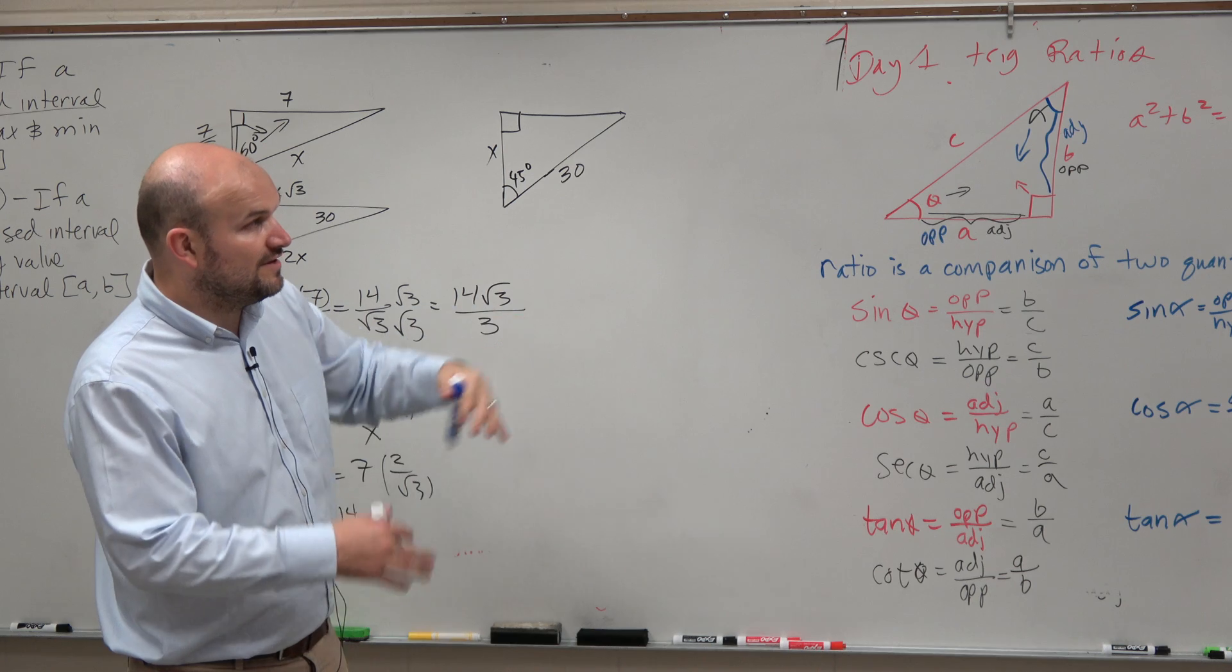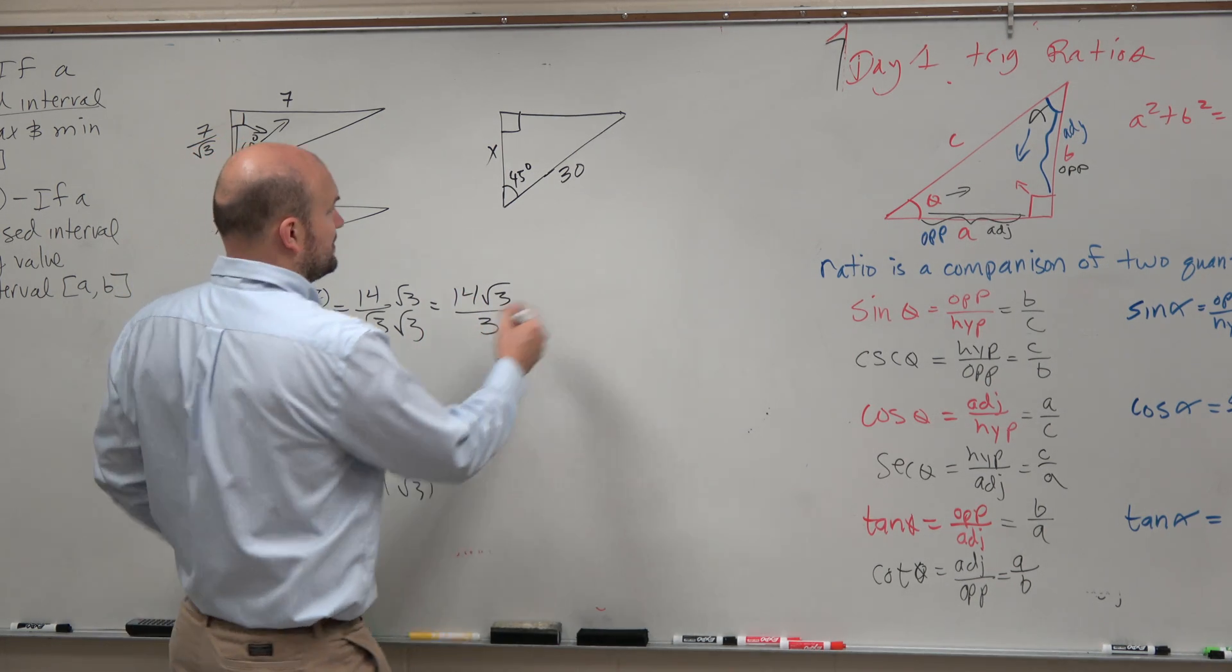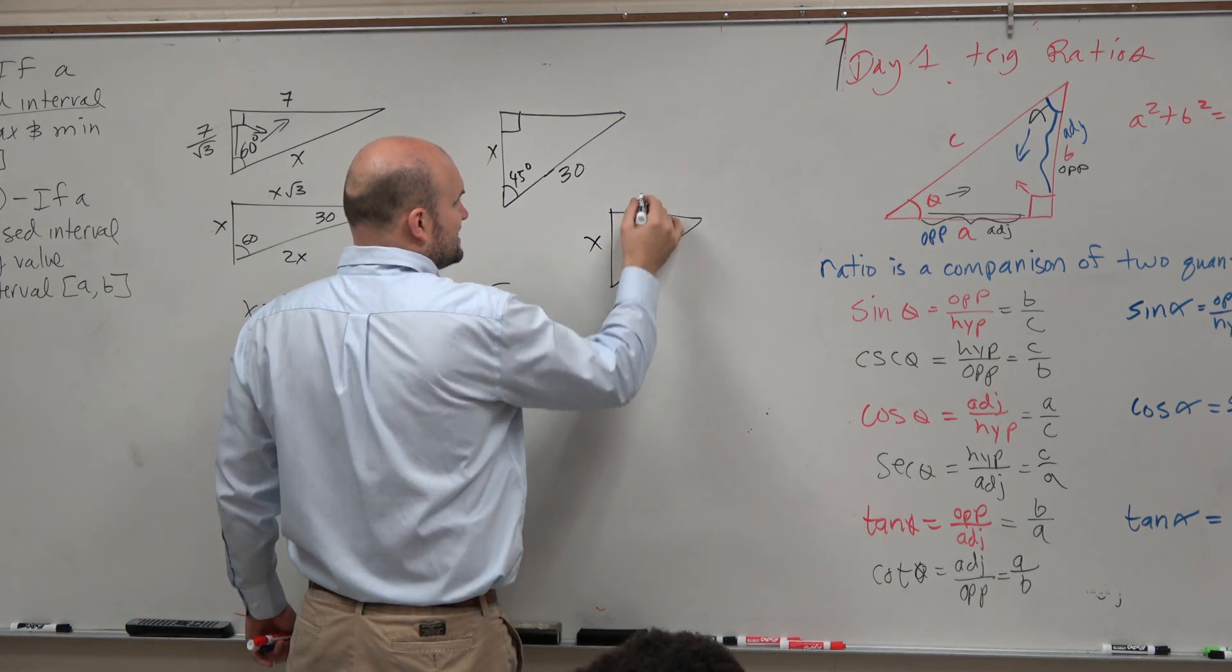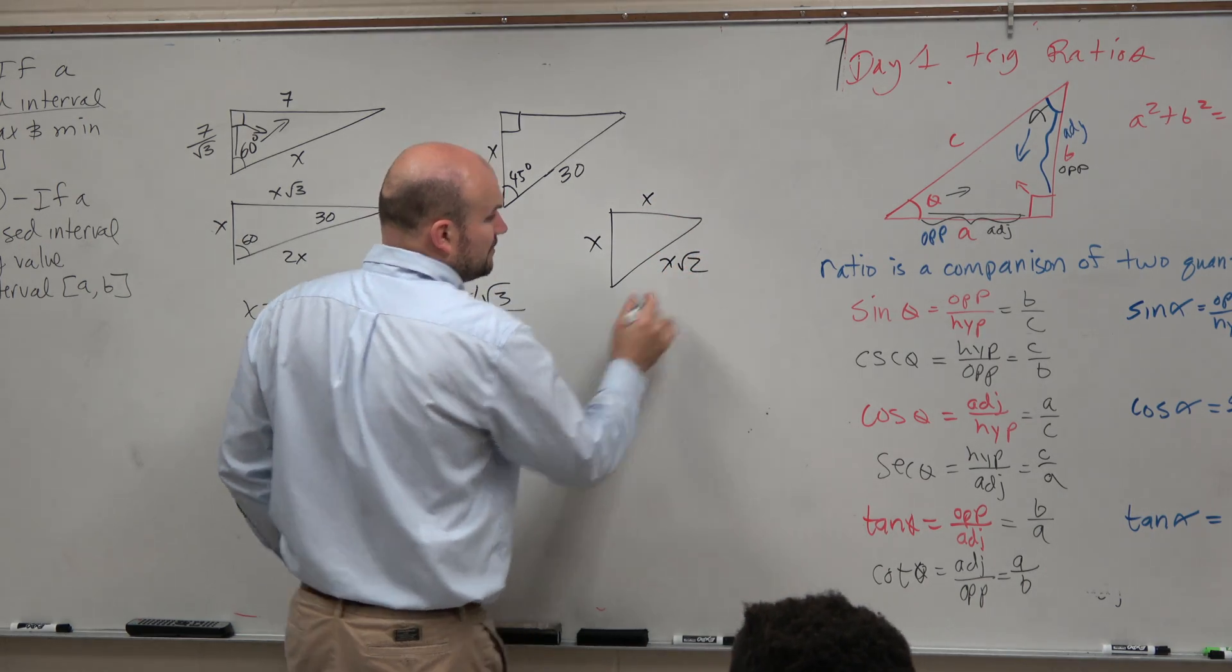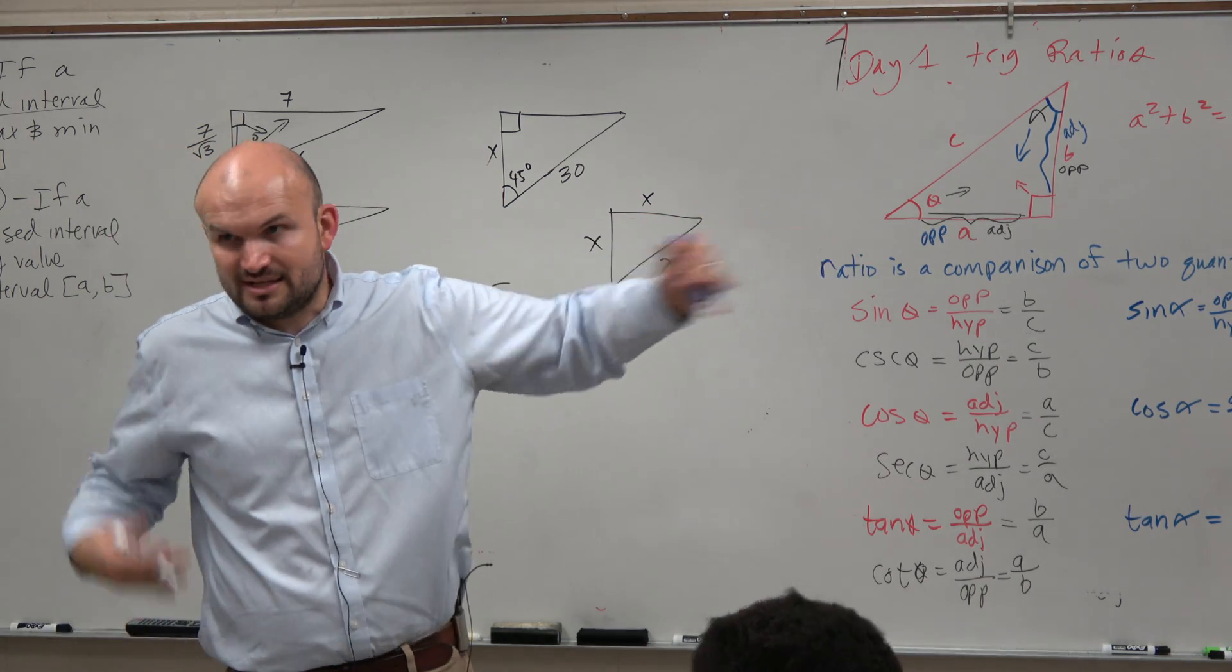So therefore, if we look at our special relationship, if we have this is x and this is x, that means that's x square root of 2. That's just right there, right? And that's our basic understanding.